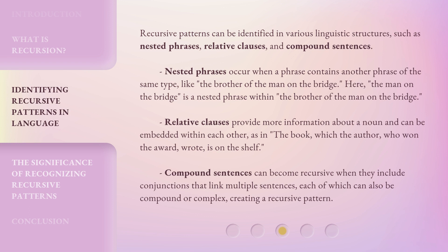Relative clauses provide more information about a noun and can be embedded within each other, as in 'the book which the author, who won the award, wrote is on the shelf.' Compound sentences can become recursive when they include conjunctions that link multiple sentences, each of which can also be compound or complex, creating a recursive pattern.